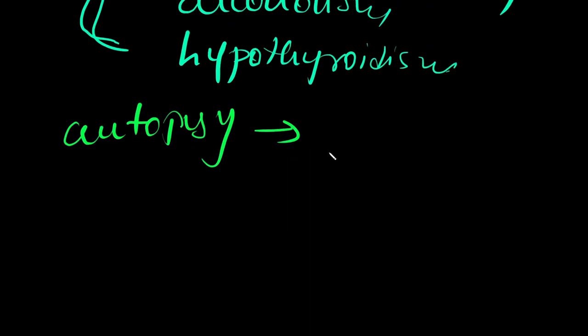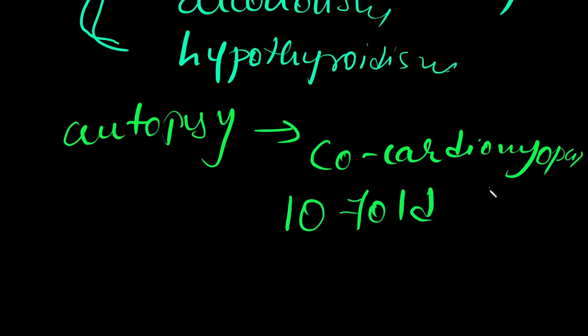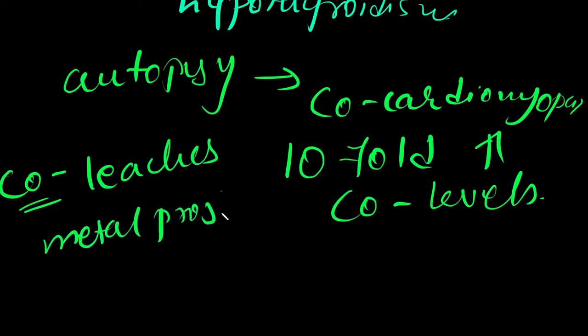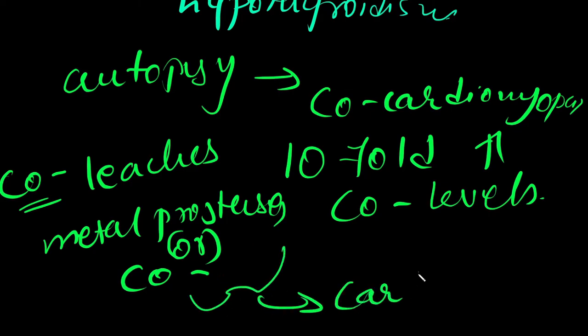Autopsy reports revealed that cobalt cardiomyopathy was associated with 10-fold increase in cobalt levels in heart or cardiac muscles. Cobalt that leaches from metal prostheses or cobalt containing nanoparticle wear products was also found to cause cobalt cardiomyopathy.